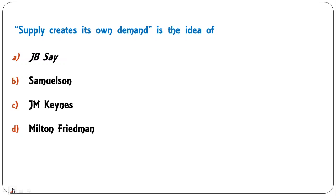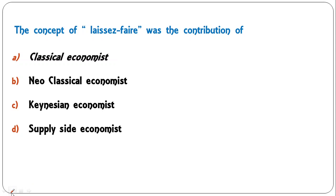Next question: 'supply creates its own demand' is the idea of J.B. Say, Samuelson, J.M. Keynes, or Milton Friedman? This is a famous quotation given by J.B. Say, so A is the correct answer.